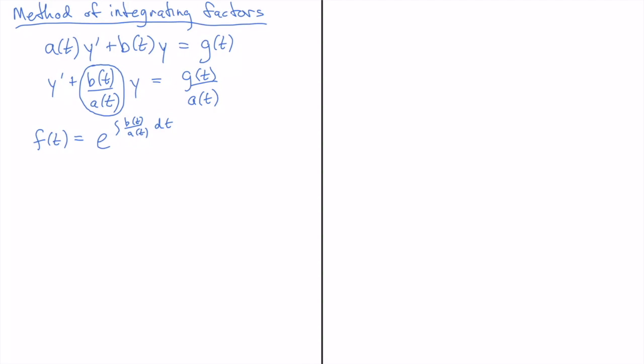Okay so once we multiply through by that we'll get e. Now I'm going to rewrite that a little bit more simply as e to the h of t where h of t is this antiderivative.